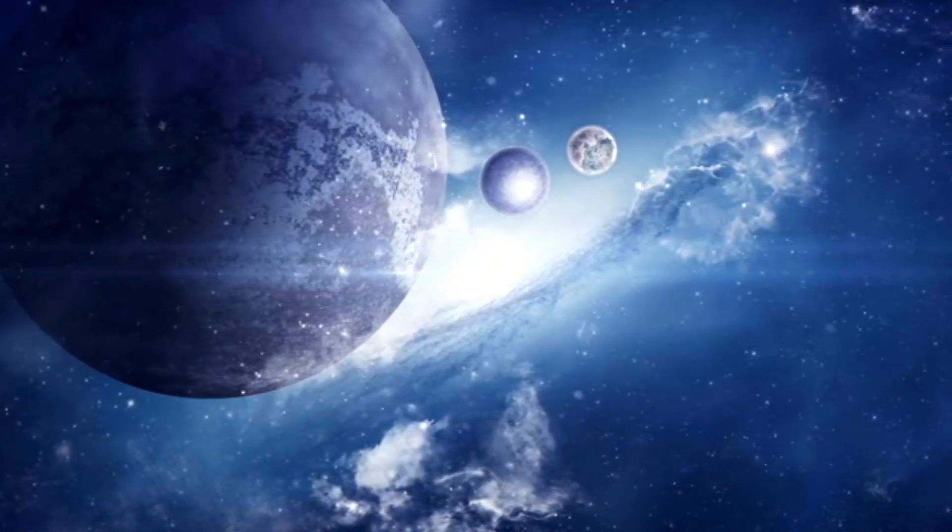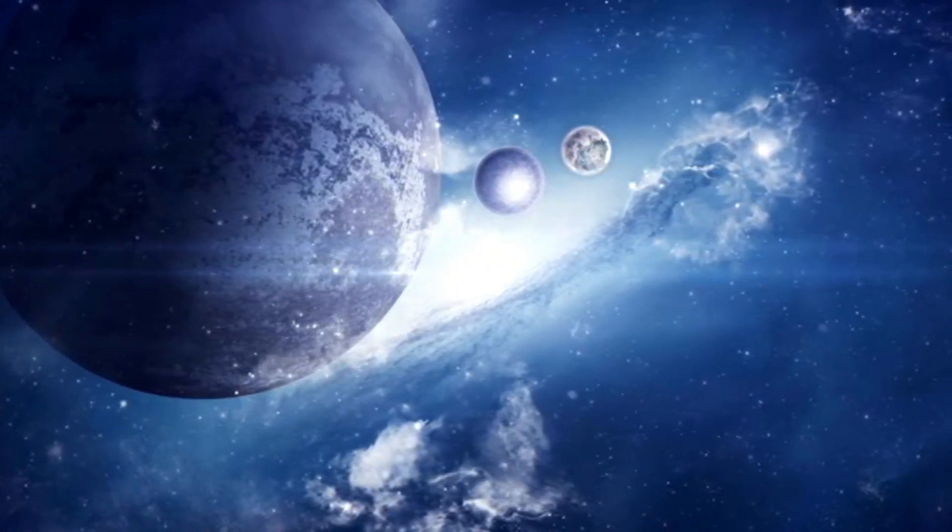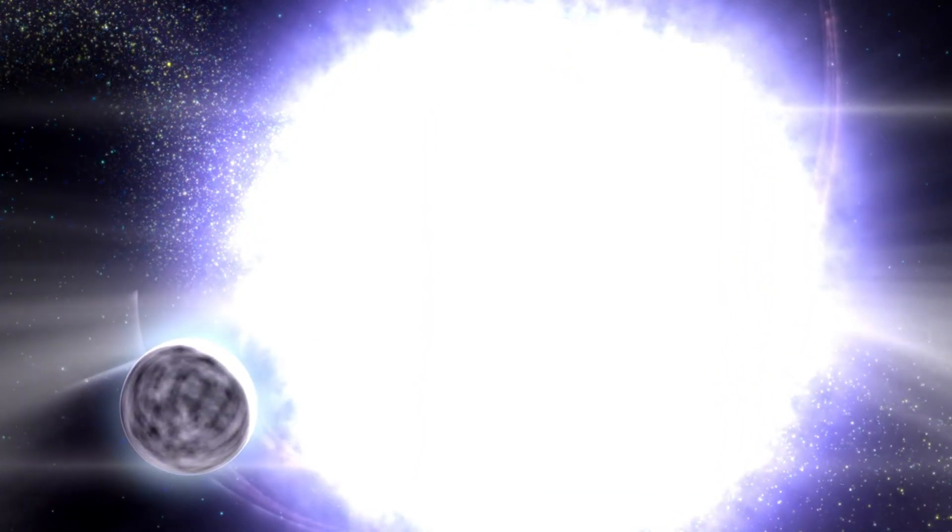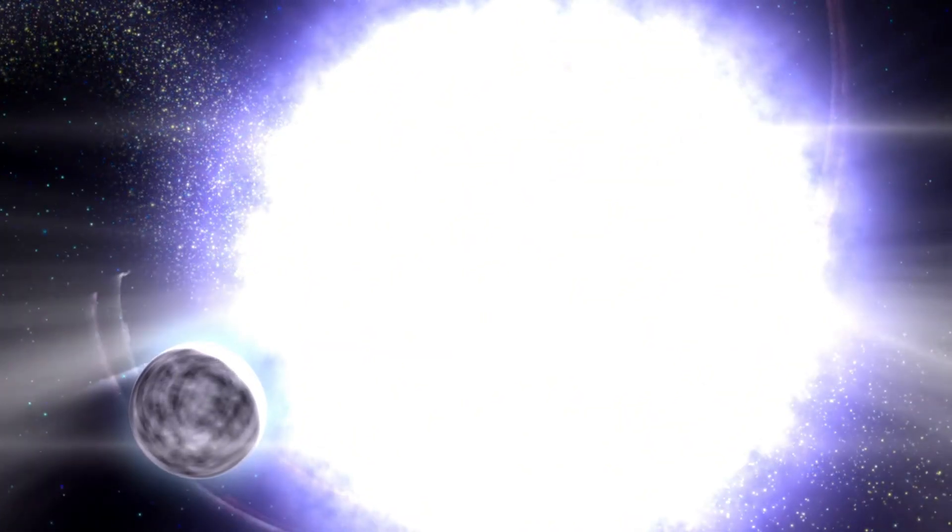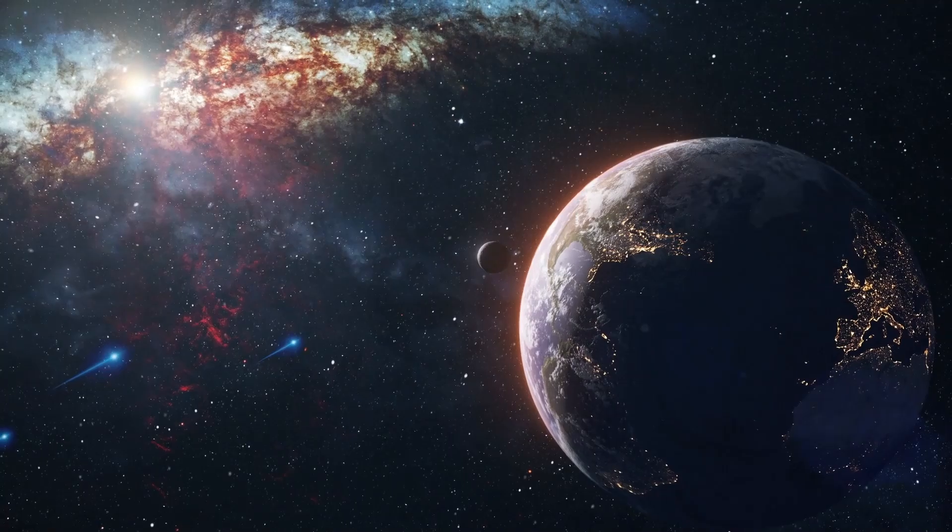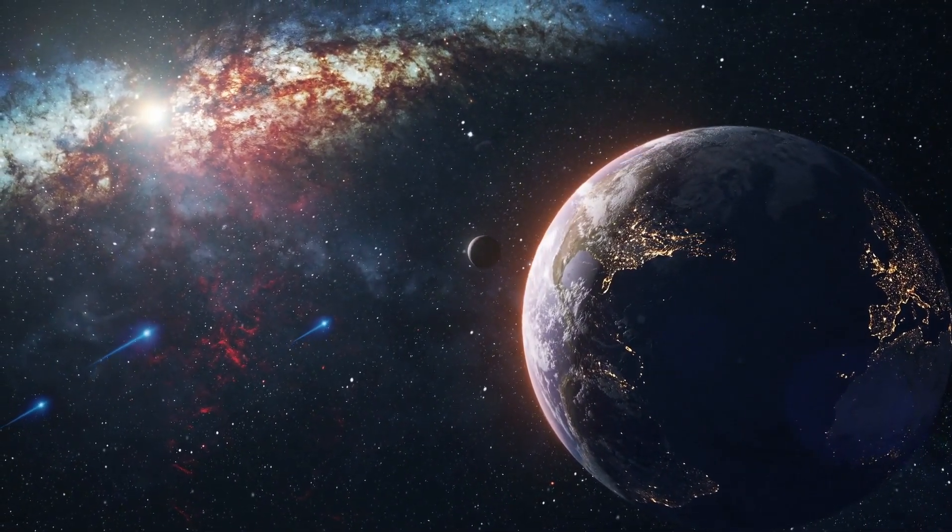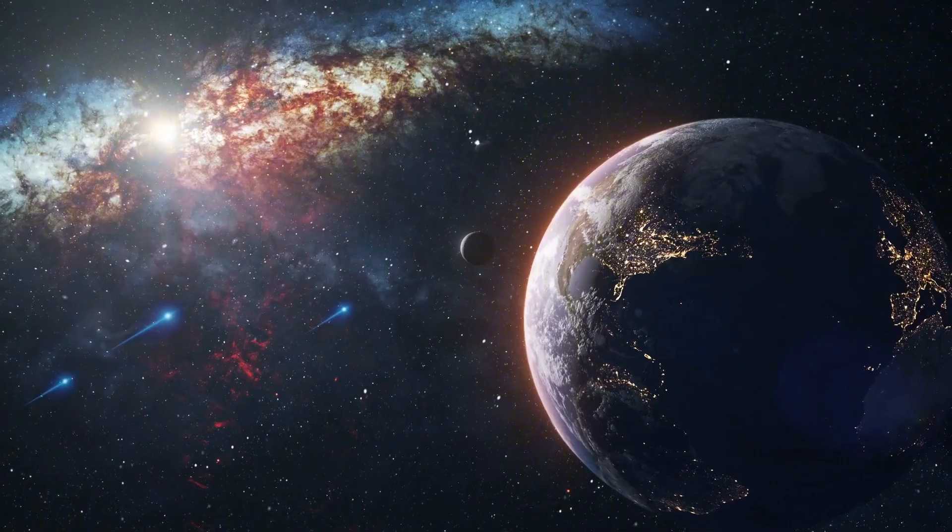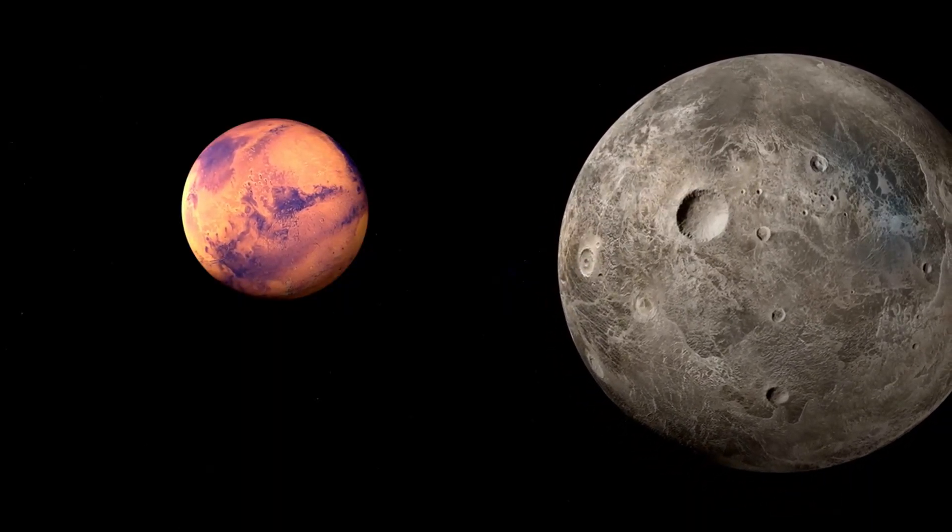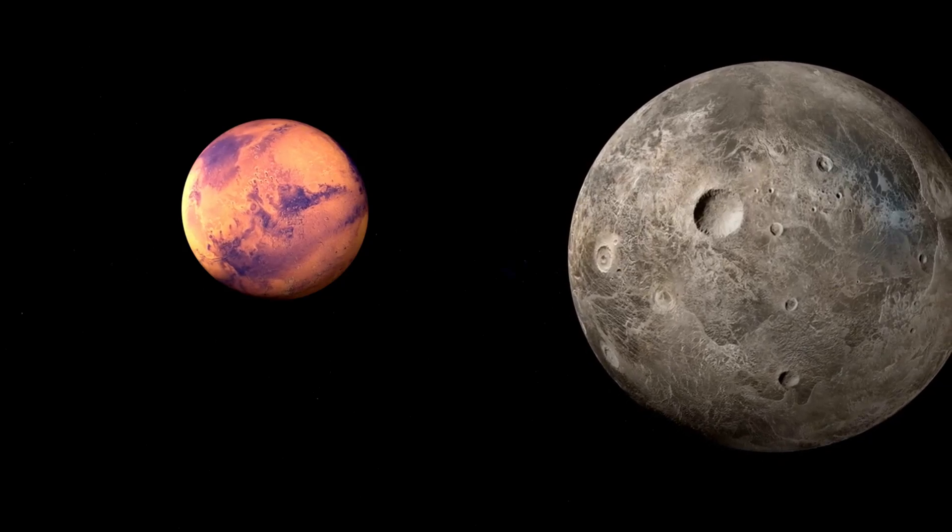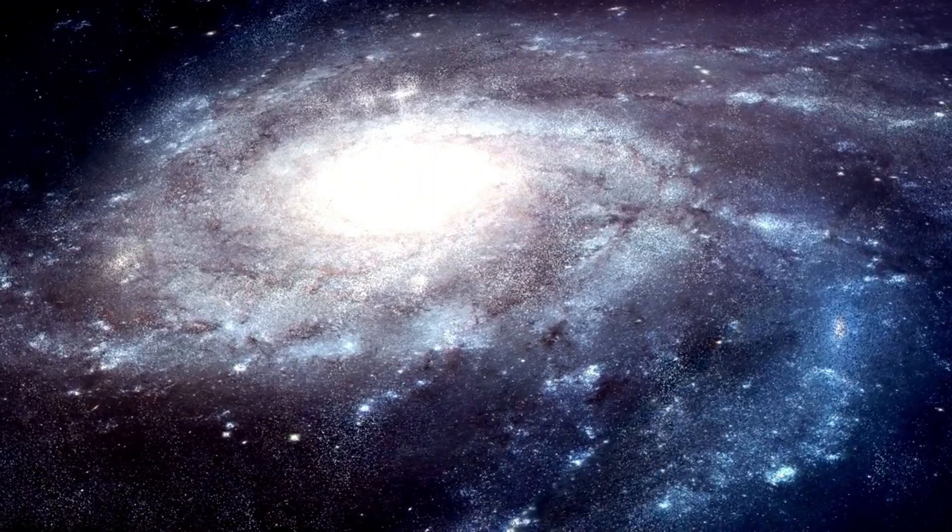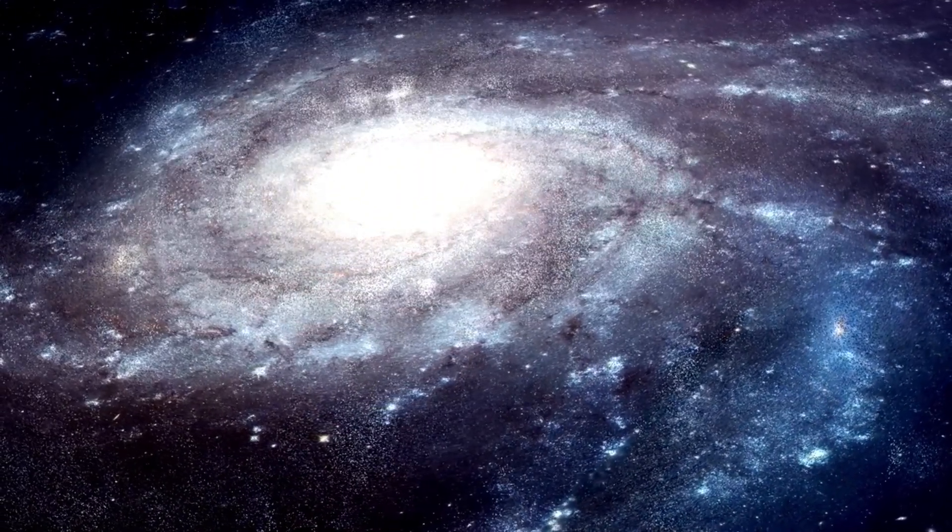To understand Kaku's statement, we need to explore the nature of black holes, the current state of research, and the significance of the latest discoveries. A black hole is an area in space where the gravitational pull is so strong that not even light can escape it. This phenomenon is the result of a massive star collapsing under its own gravity after it has exhausted its nuclear fuel. When this happens, the star's core contracts, and if the mass is great enough, it forms a singularity, a point of infinite density where the laws of physics as we know them break down. Surrounding this singularity is the event horizon, which marks the boundary beyond which nothing can escape, not even light.